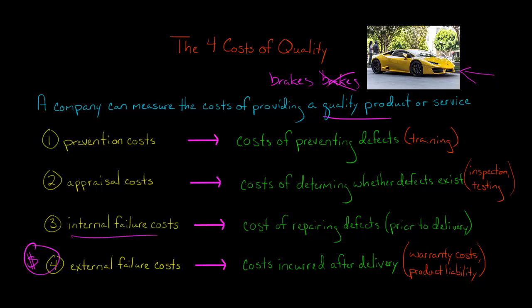So we have a number of costs here. We think about preventing defects from occurring, identifying whether they exist once they have occurred, and repairing them before they get to the customer. But the most costly of all is once we've actually delivered the product to the customer — if there's some kind of problem and they want to send it back, or in the worst case scenario, people end up getting hurt. Thank you.